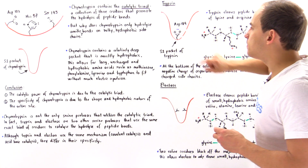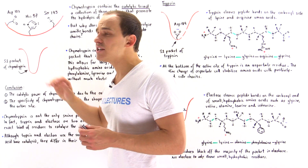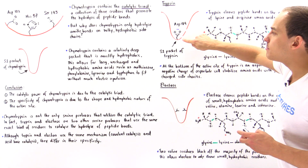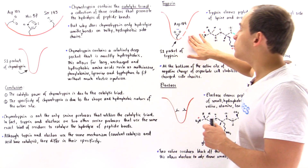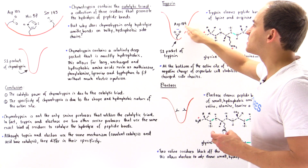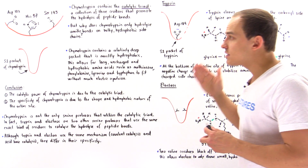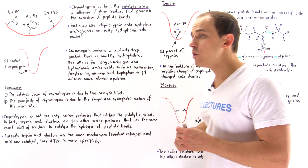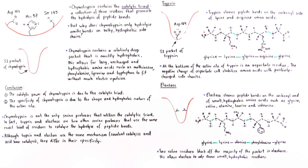If we examine the S1 pocket of trypsin, at the bottom of that S1 pocket, we're going to see a residue that we don't see in the S1 pocket of chymotrypsin. At the bottom of the trypsin S1 pocket, we have a negatively charged side chain that came from aspartate — which we see in trypsin and don't see in chymotrypsin. As a result of the negatively charged side chain of aspartate 189 found at the bottom of the S1 trypsin pocket, trypsin only cleaves at the carboxyl end of those amino acids which are long and contain a positive charge at the end — and these happen to be lysine and arginine.